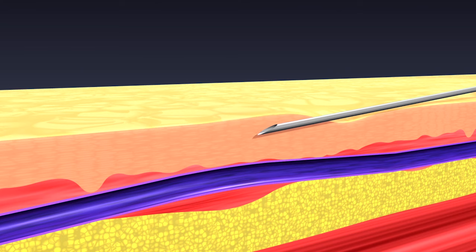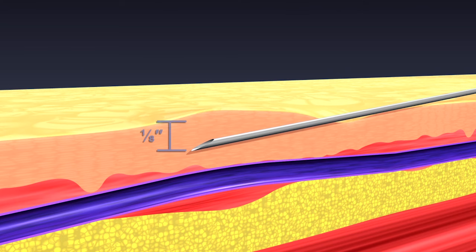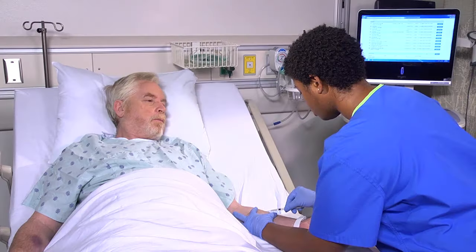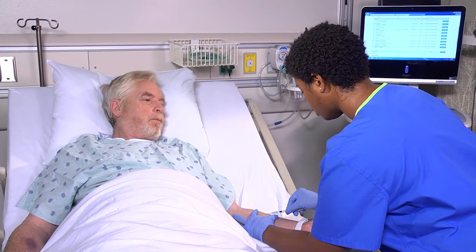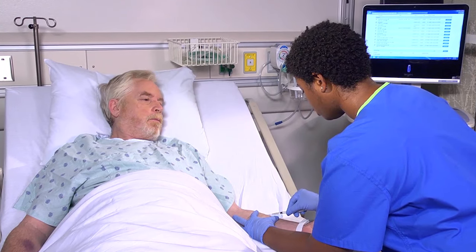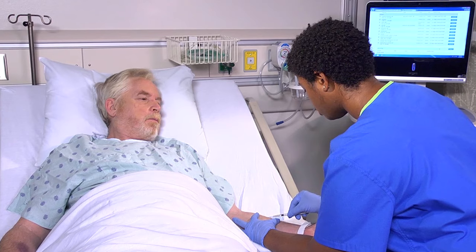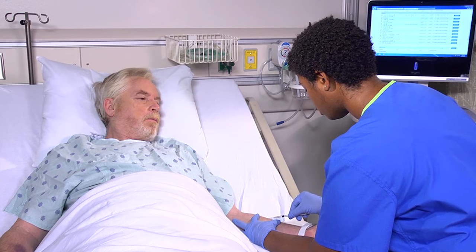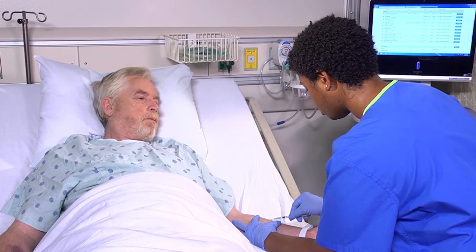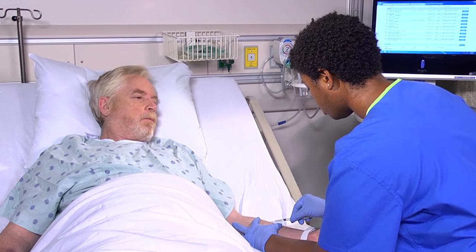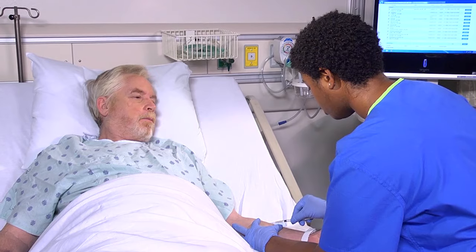Advance the needle through the epidermis to a depth of about one-eighth of an inch or three millimeters. You'll see the slight bulge of the needle tip beneath the skin. As you slowly inject the medication, you should feel resistance. If you don't, it's likely the needle is too deep. Withdraw it and begin the procedure again.